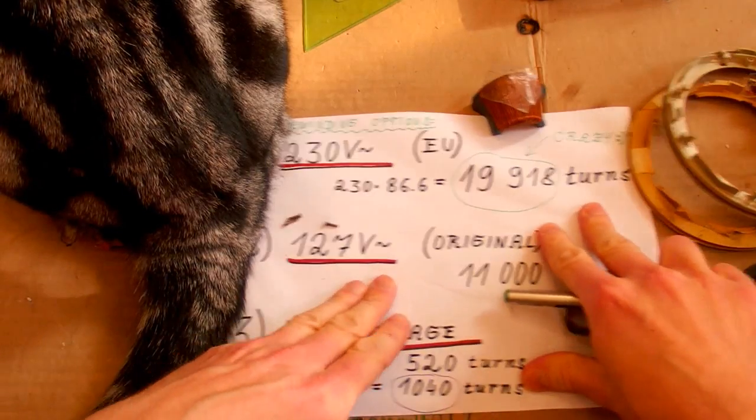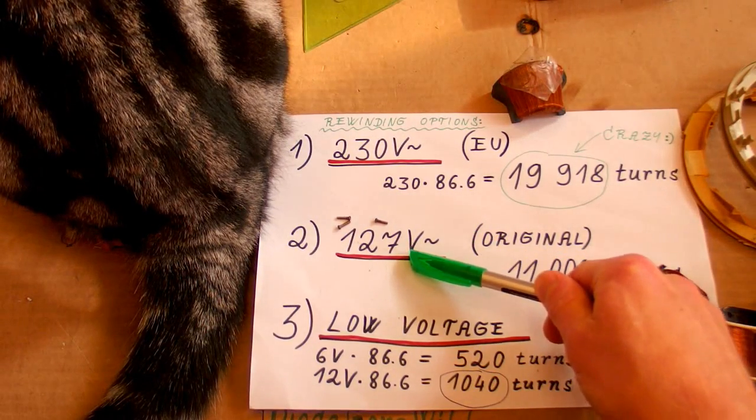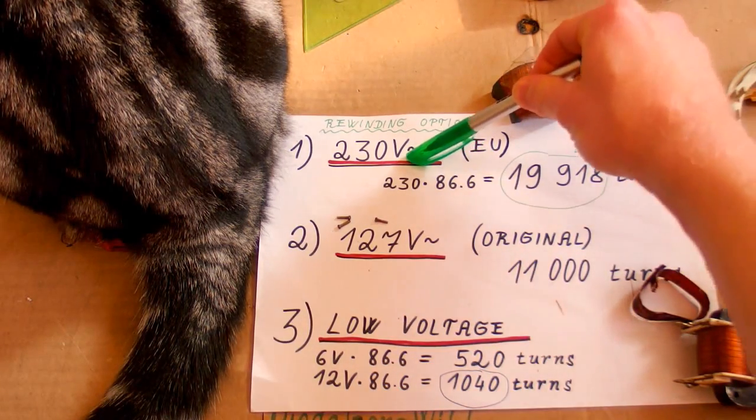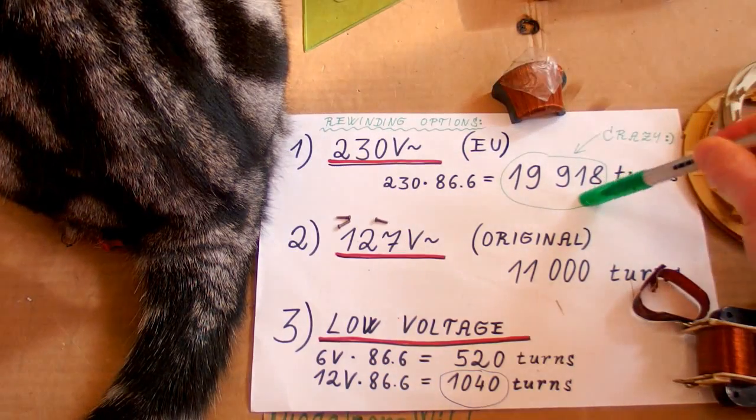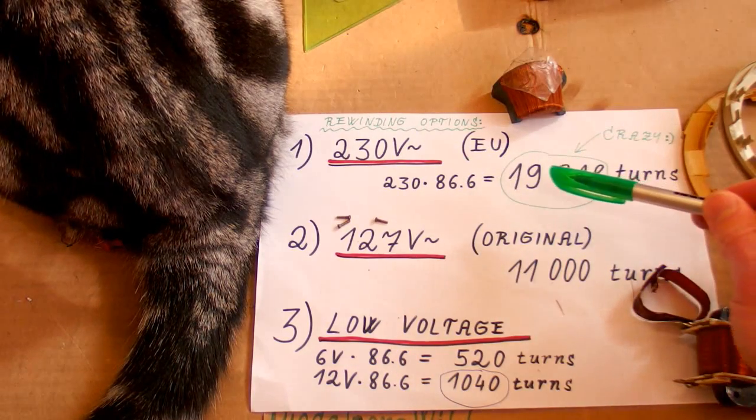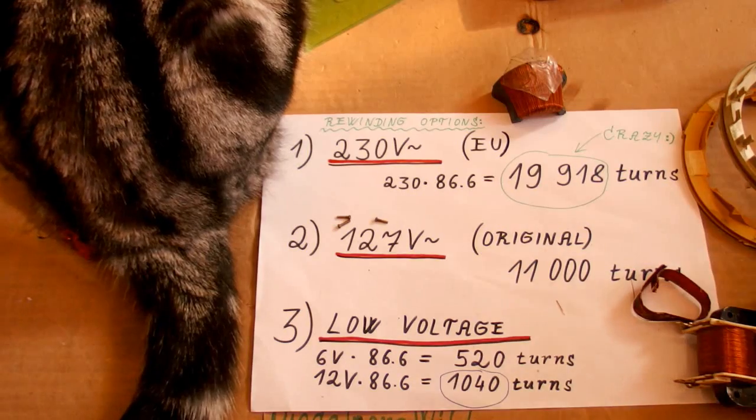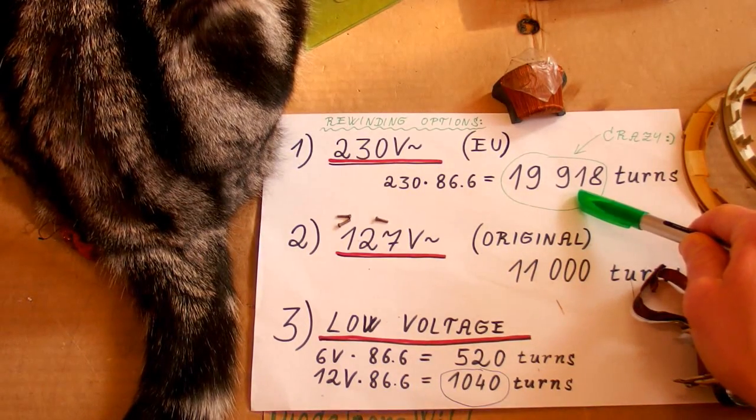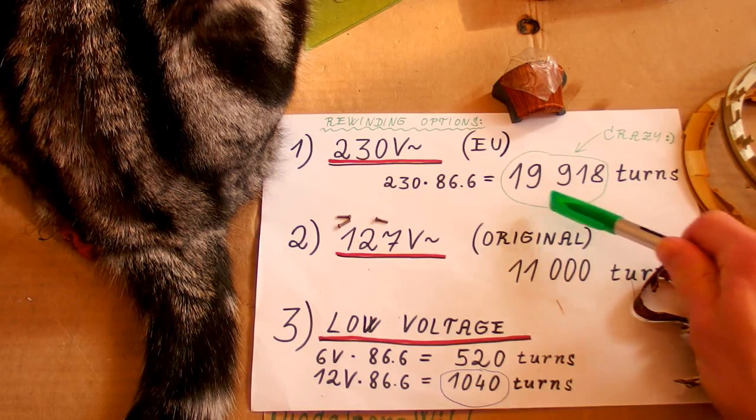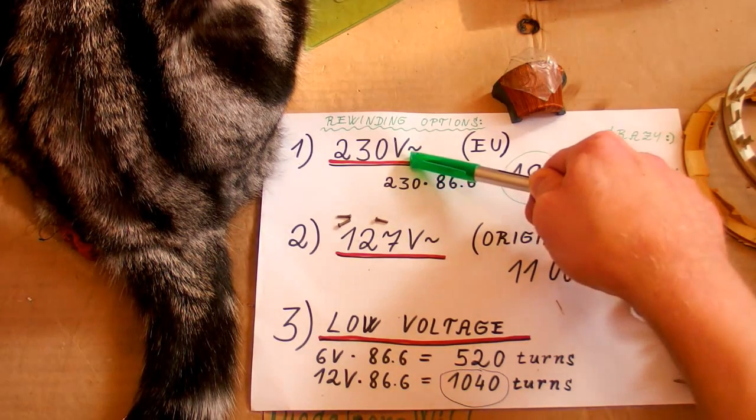So now the options for rewinding are: I could rewind it to the original voltage but this is completely useless voltage for me. My mains voltage is 230 volts. But rewinding it for such a high voltage requires a crazy number of turns, about 20,000 turns. Also at such high voltage the winding can easily break down and requires super thin wire to fit. So it's quite hard and can fail.